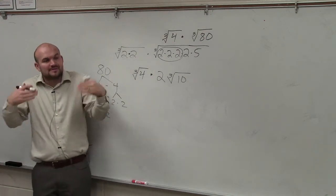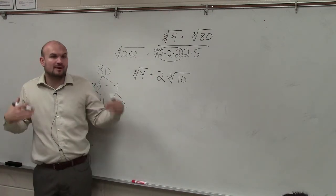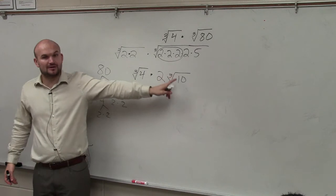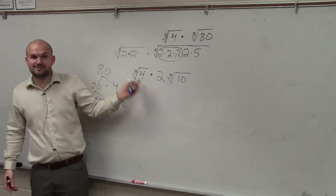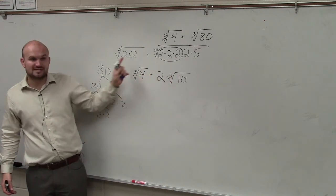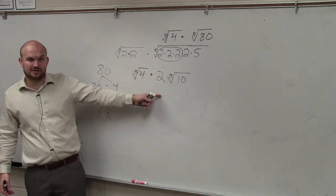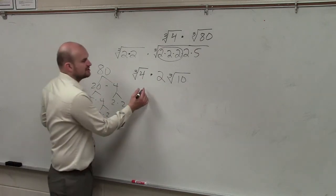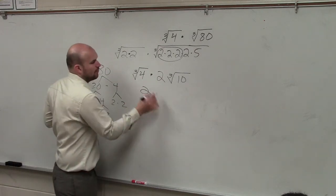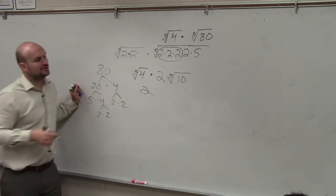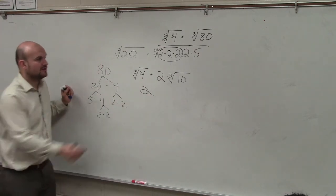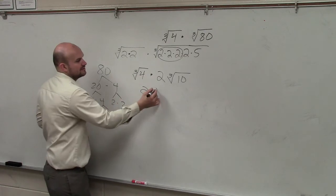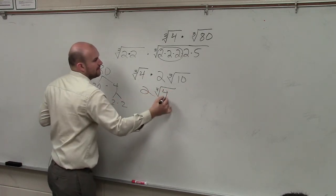So I simplified it. That's what I said — simplify first. Then the next step is to multiply. Remember when we multiply, we can only multiply numbers inside the radical by each other and numbers outside the radical by each other. This is a 2, and this doesn't have a number in front, so you can say it's 1 — so you just have 2. And then 4 times 10 is 40.